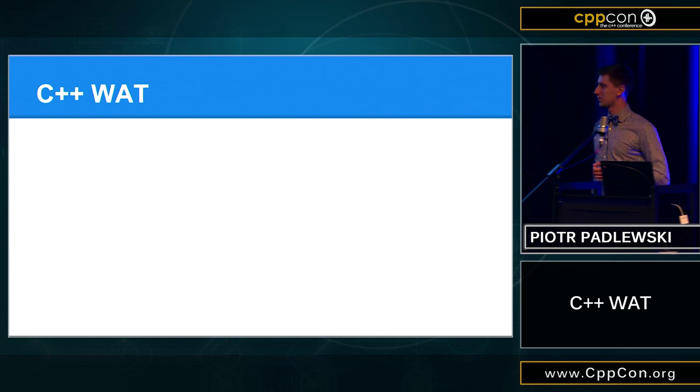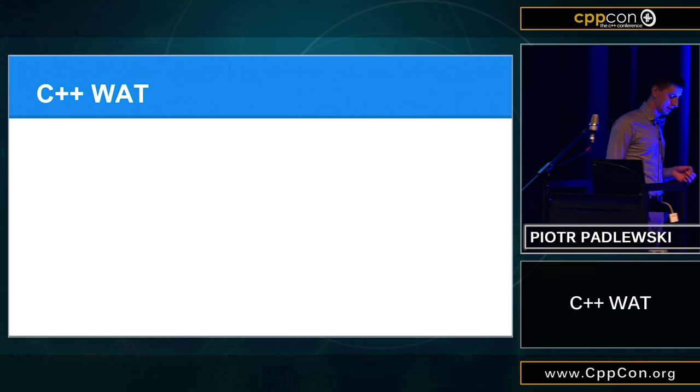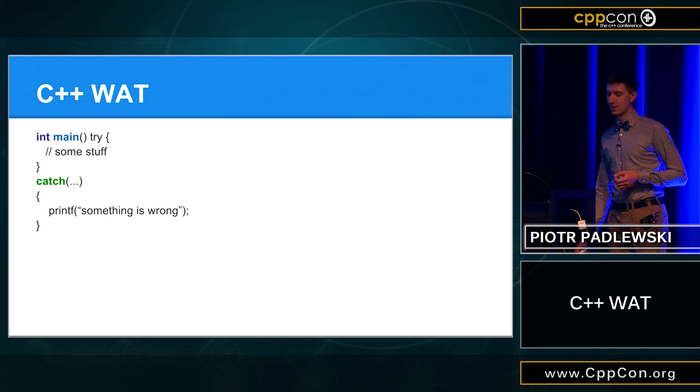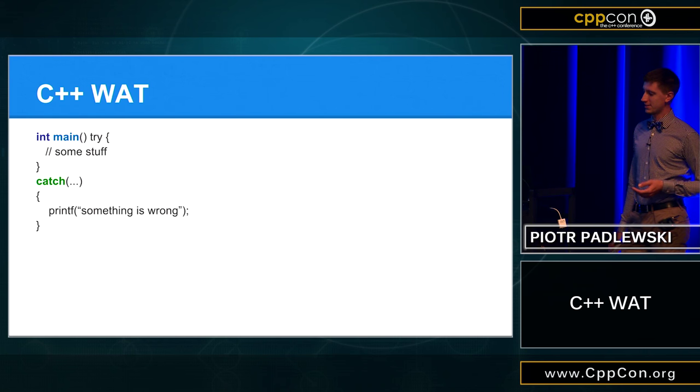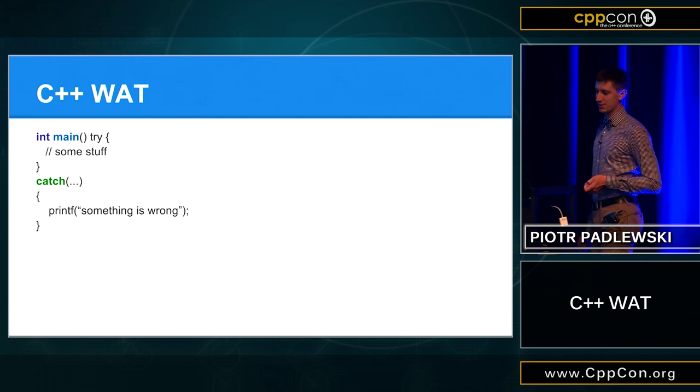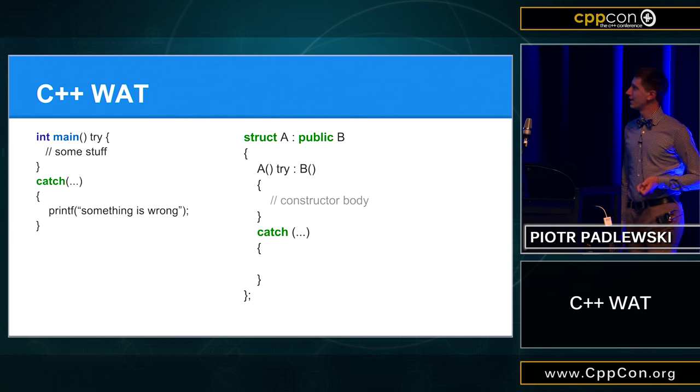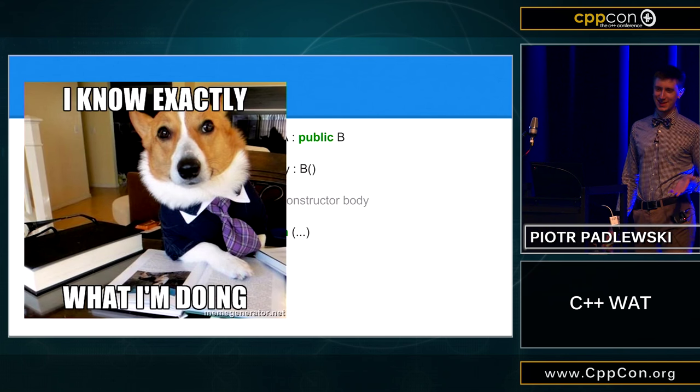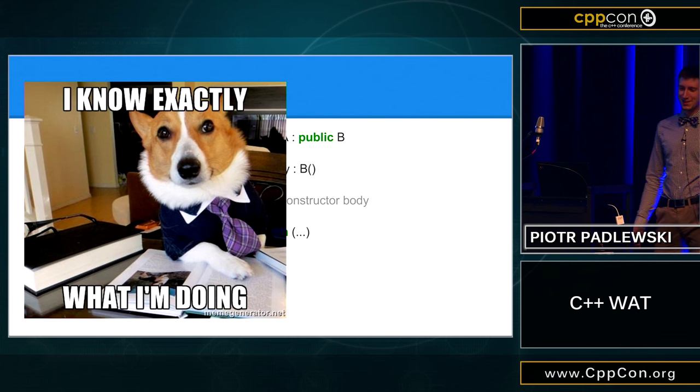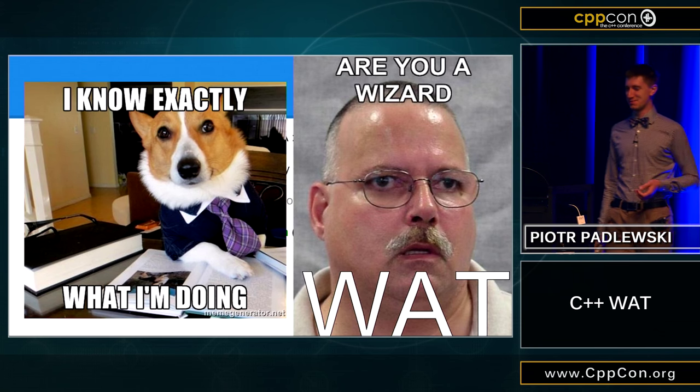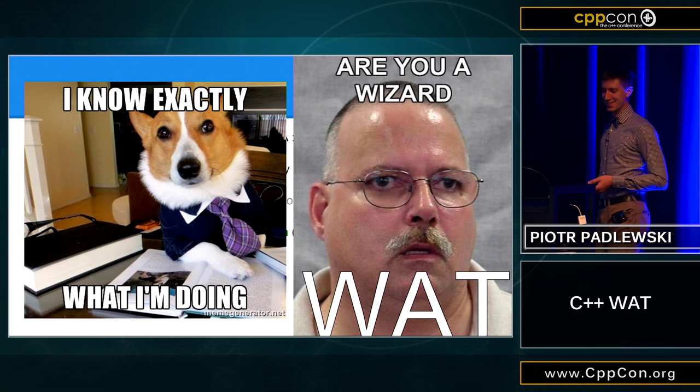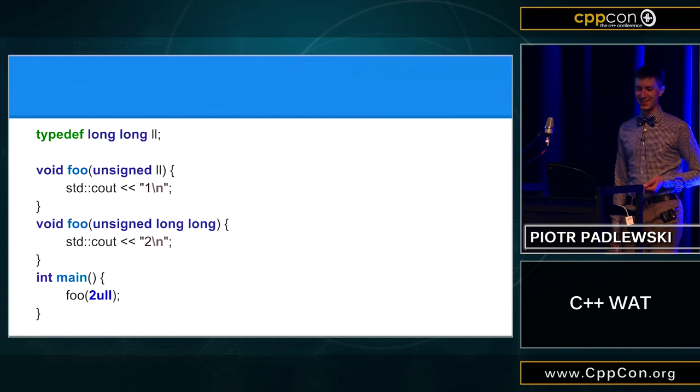Okay. Did you know that you can surround every block with a try-catch block? So, you can do something like this. Right? So, this looks madness. But, in fact, this is the only way to catch exceptions from initializer list. So, in fact, this is not WAT. This is a very nice feature, right? But, of course, if you will see it the first time, then this is probably WAT.